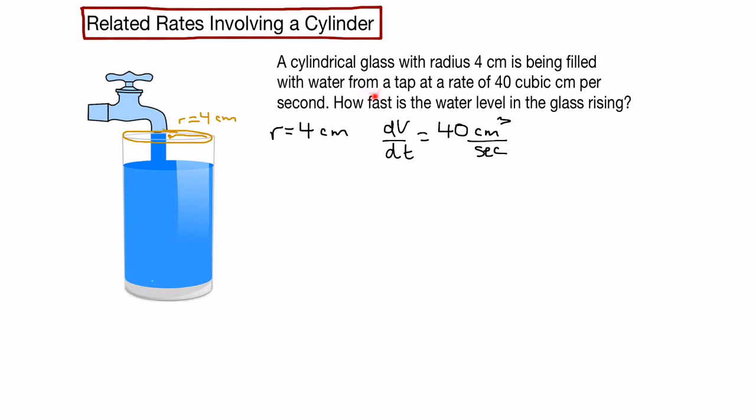And we're asked to find how fast is the water level rising. Let's take a look at the water level. Here's the water level here. And what that represents here is there's a height to the water. So what we're asked to find is the change in height with respect to time. So this question has rates involving volume and height. So how do we relate those two together?